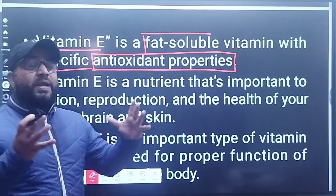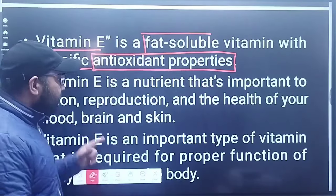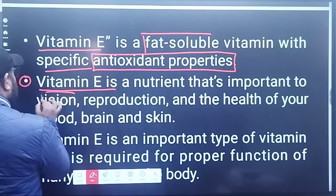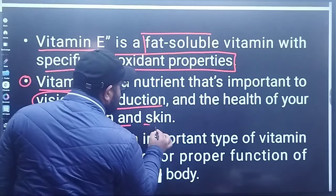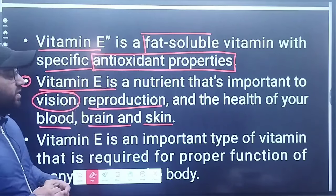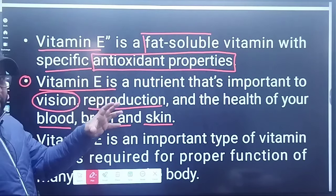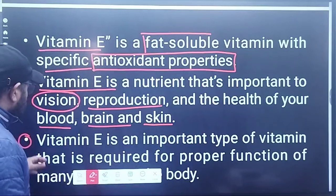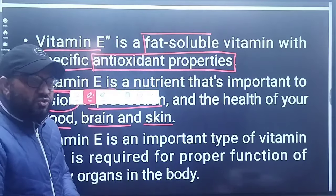The next point: Vitamin E is a nutrient that is important for vision, reproduction, and the health of your blood, brain, and skin. There are many vitamins which have these properties, but Vitamin E specifically is important for vision, reproduction, and overall organ health. Vitamin E is required for proper functioning of many organs in the body.